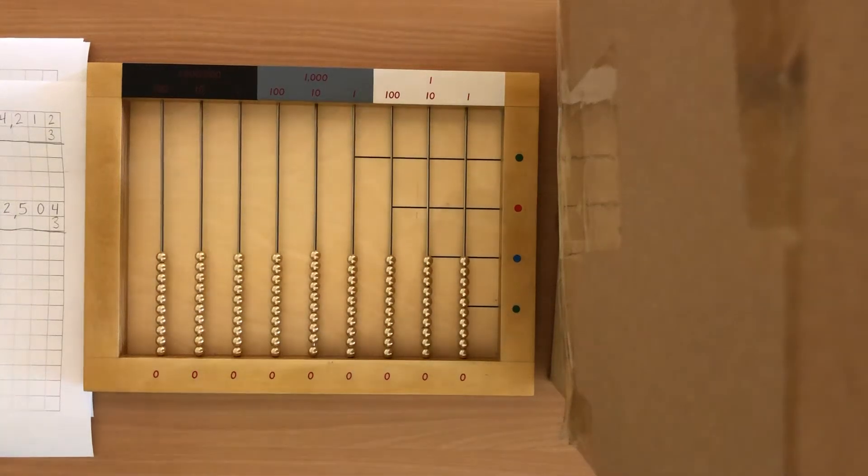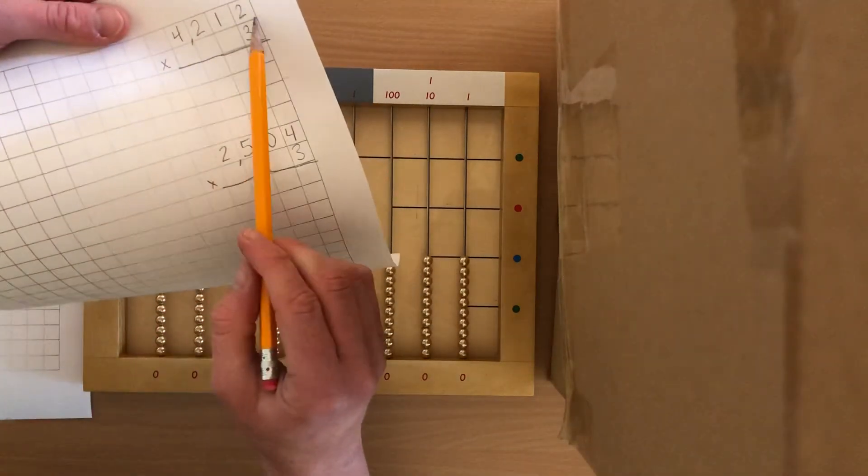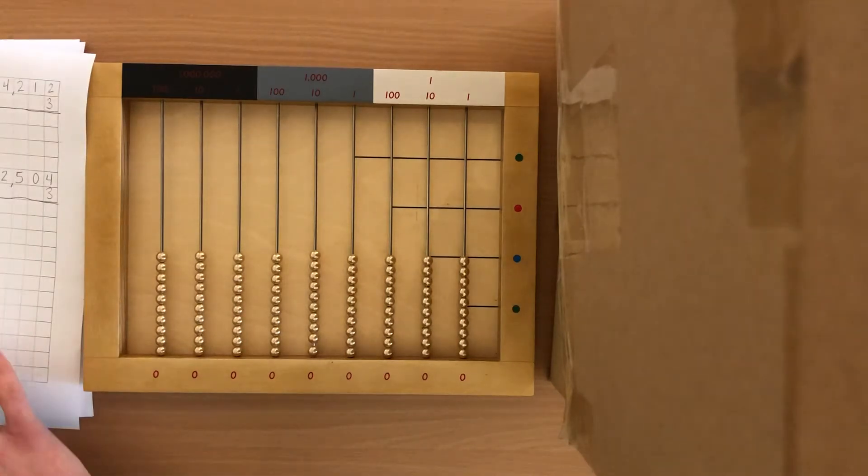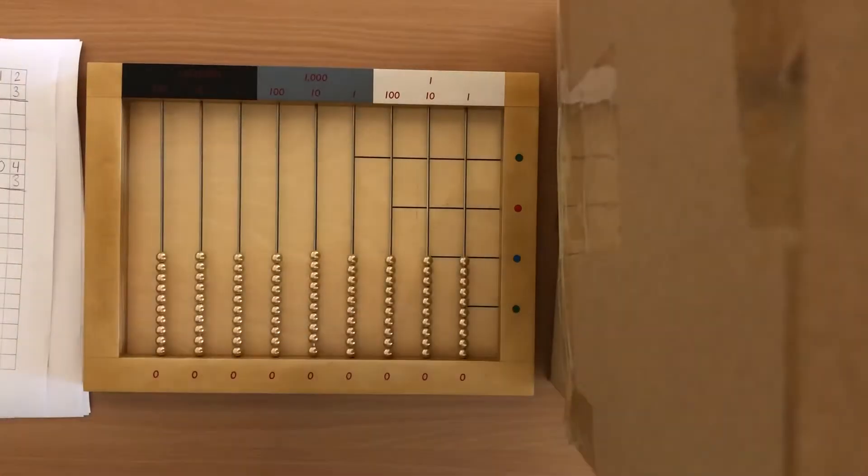Okay, so we're gonna do our first problem together. So our first problem is 4,212 times 3. So how we're gonna do that, we're actually gonna take a piece of paper, we're gonna put it on the bead frame.